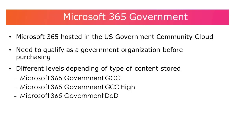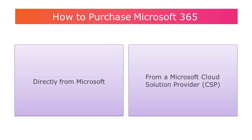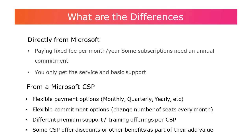Now let's talk about how to purchase Microsoft 365. We'll cover the two main ways: either directly from Microsoft or from a Microsoft Cloud Solutions Provider, also commonly called a CSP. When you buy from Microsoft, you pay a fixed fee, and the payment models are usually either per month or per year. From a CSP, you usually have more flexible payment options such as monthly, quarterly, yearly, bi-yearly, and so on.